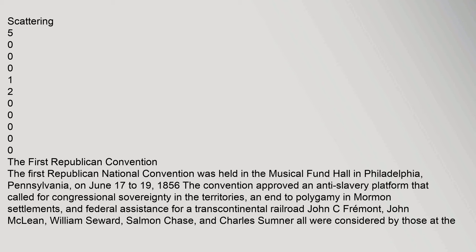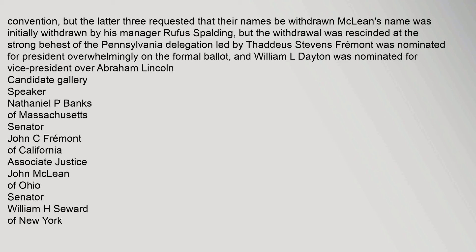John C. Fremont, John McLean, William Seward, Salmon Chase, and Charles Sumner were all considered by those at the convention, but the latter three requested that their names be withdrawn. McLean's name was initially withdrawn by his manager Rufus Spaulding, but the withdrawal was rescinded at the strong behest of the Pennsylvania delegation led by Thaddeus Stevens. Fremont was nominated for president overwhelmingly on the formal ballot, and William L. Dayton was nominated for vice president over Abraham Lincoln.